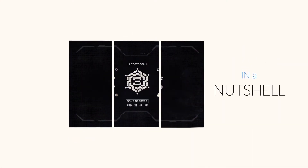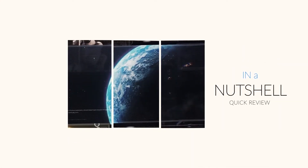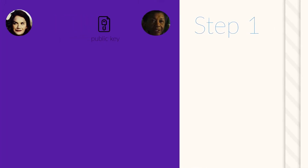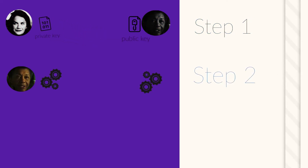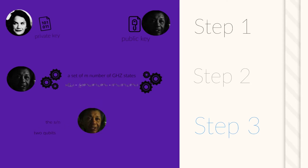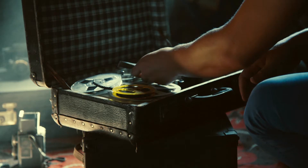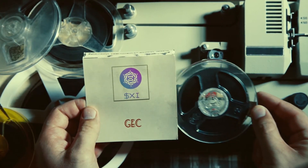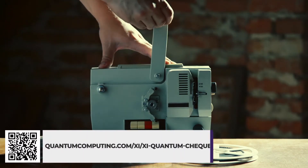Initially, a shared key is prepared by Alice and the meta-oracle. Then Alice gives her public key to the meta-oracle and collects her private key. The meta-oracle prepares a set of M number of GHZ states. From every GHZ entangled state, the meta-oracle gives two qubits and the serial number to Alice, while keeping the third qubit and other information secretly in a database. We deliberately omit some details so as not to tire you.